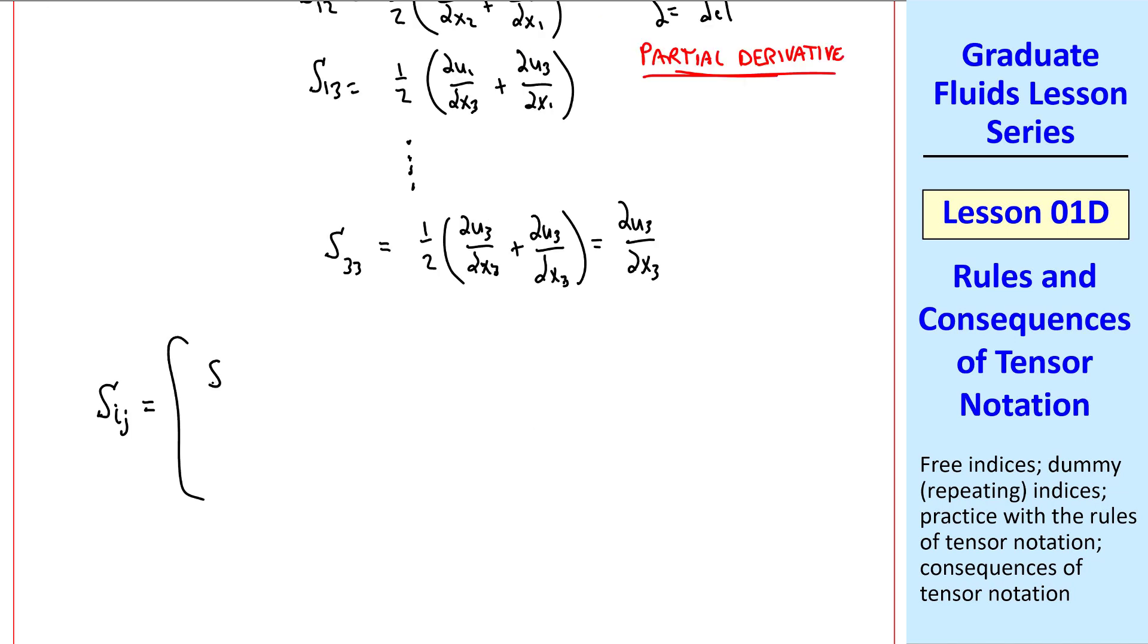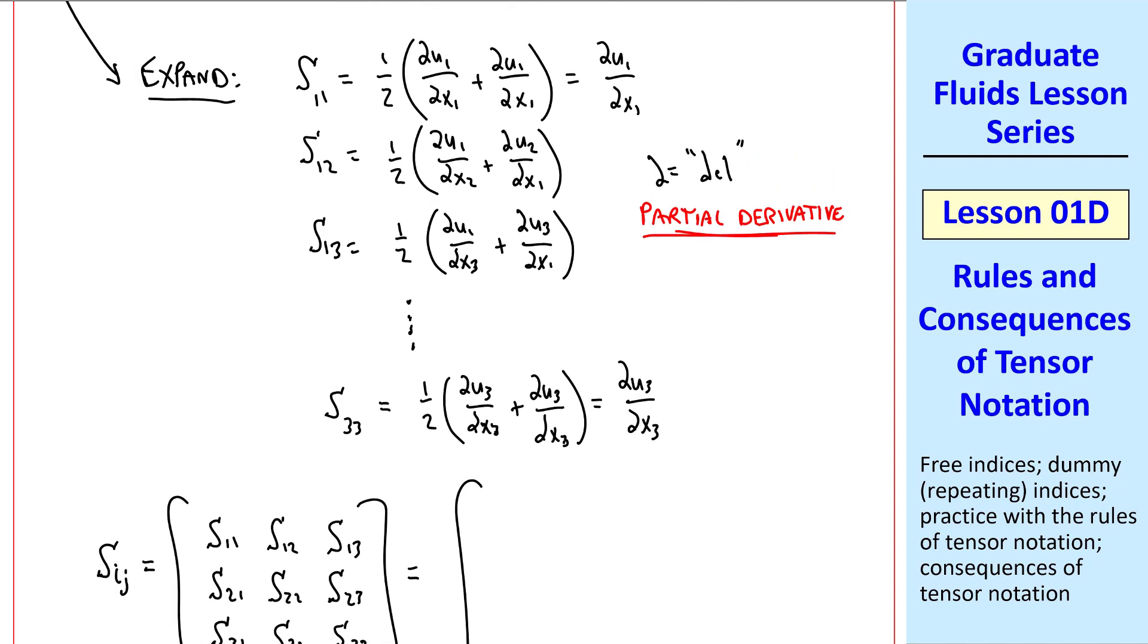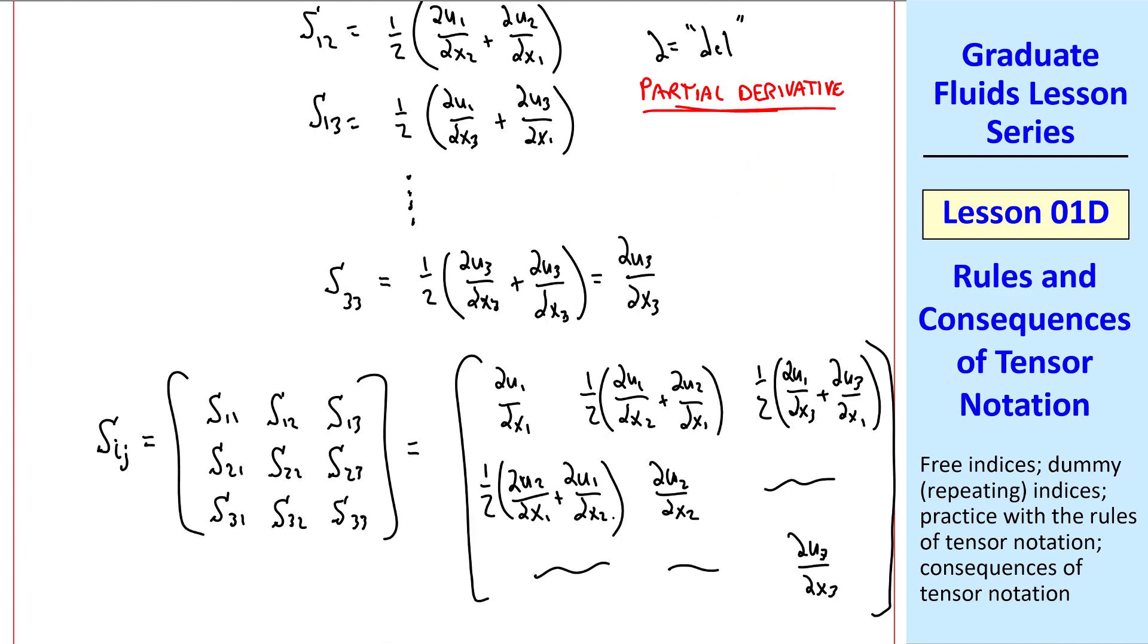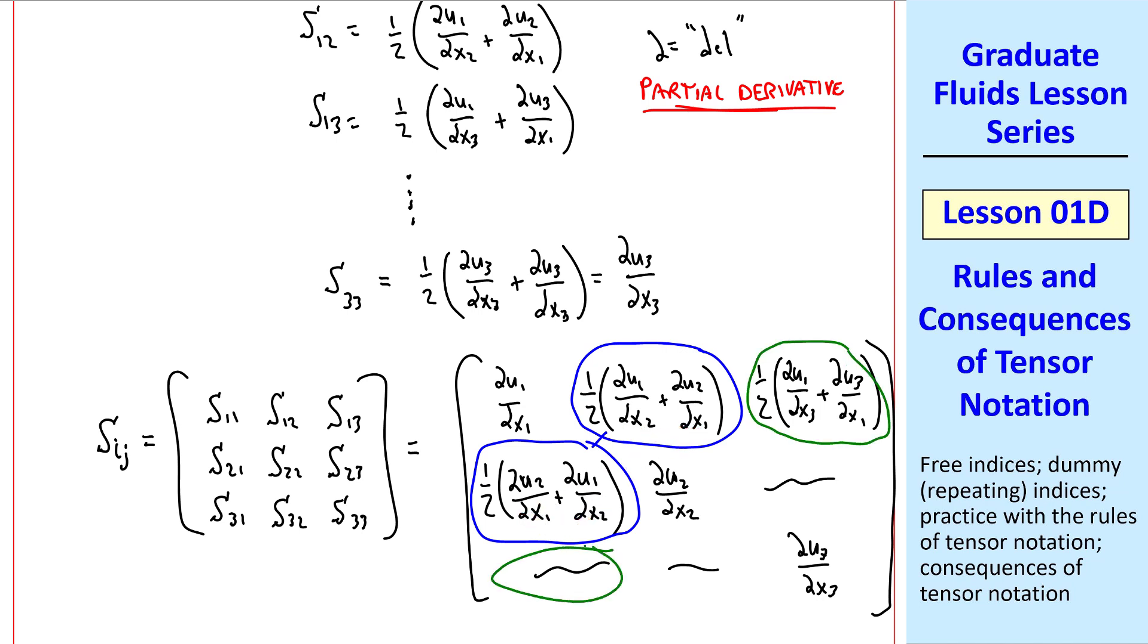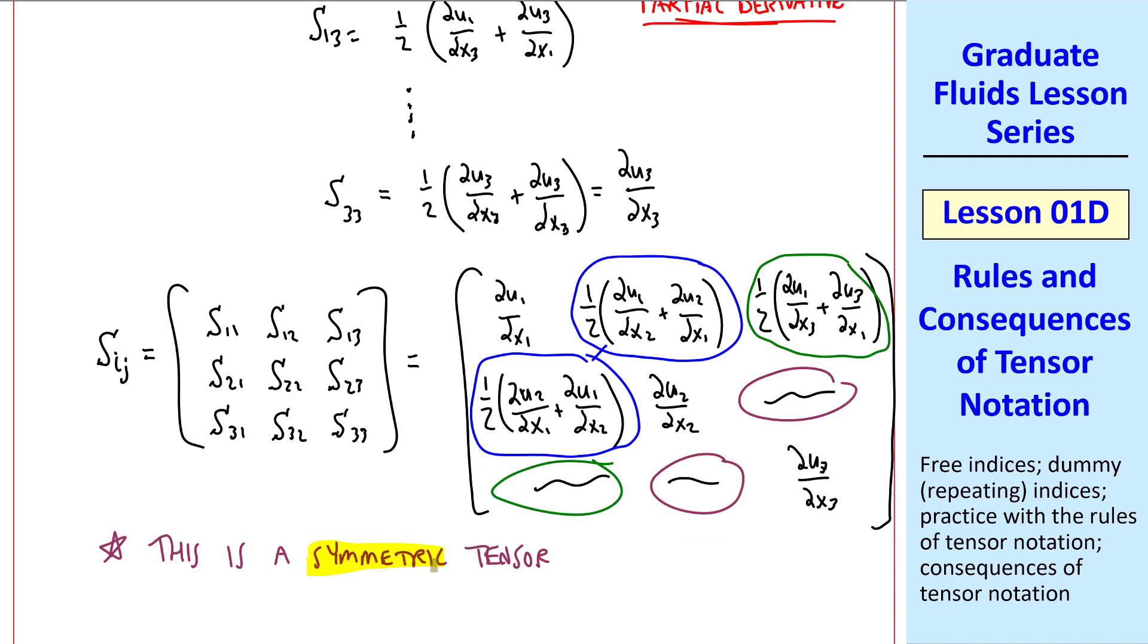Since this is a second-order tensor, we can write it as a matrix. And you're welcome to fill in all these components. I left a few of them out. But I want to point out that this term is equal to this term, since all we did was switch these two terms around. Similarly, this term would equal this term, and this term equals this term. We say, therefore, that this is a symmetric tensor.